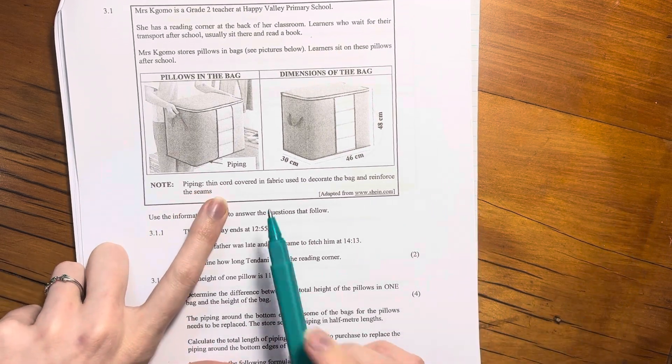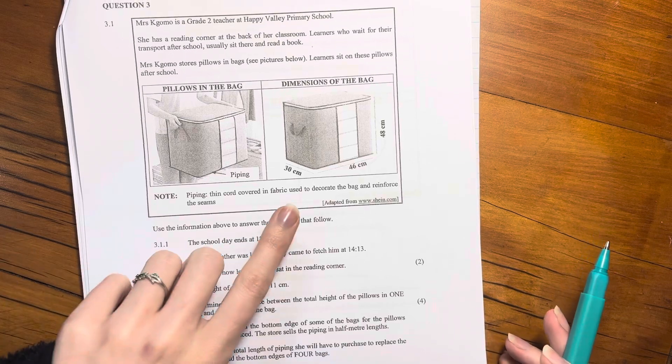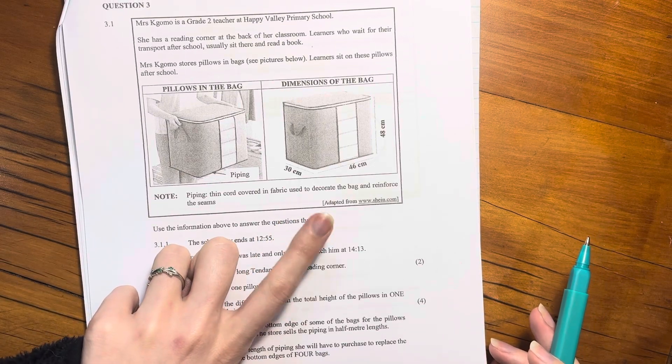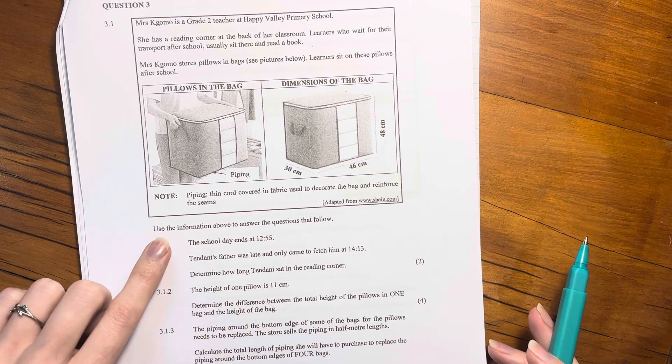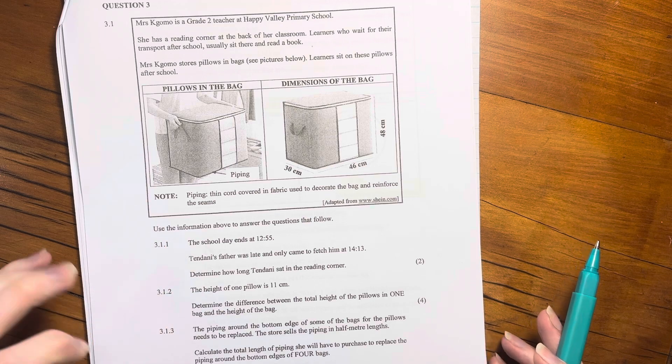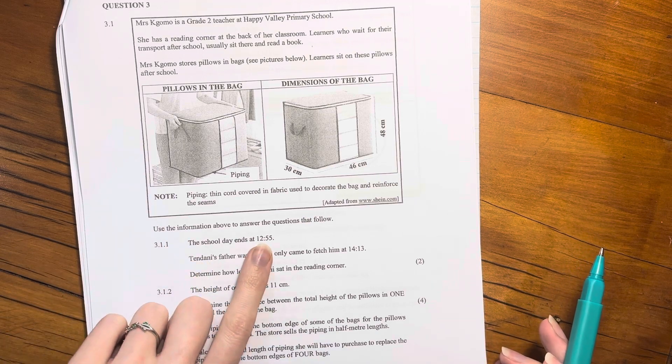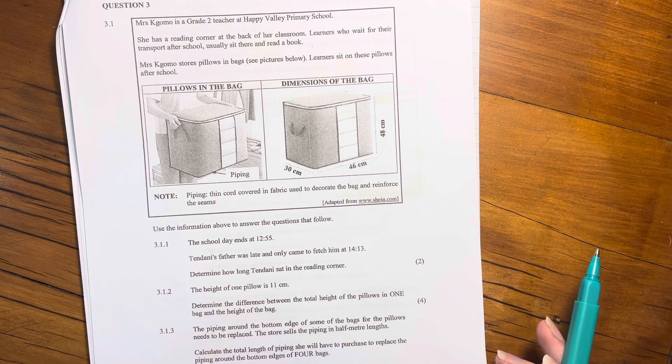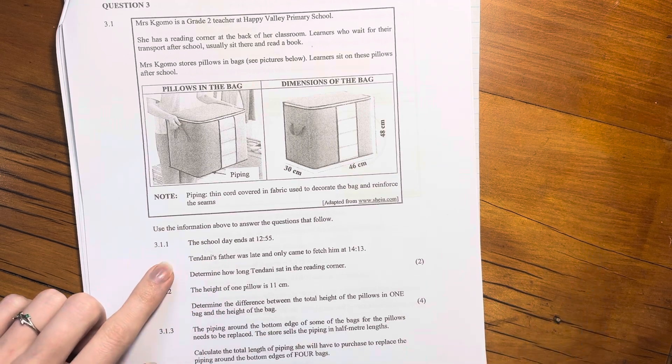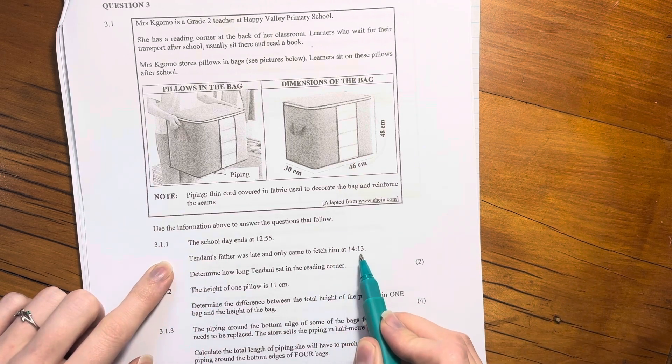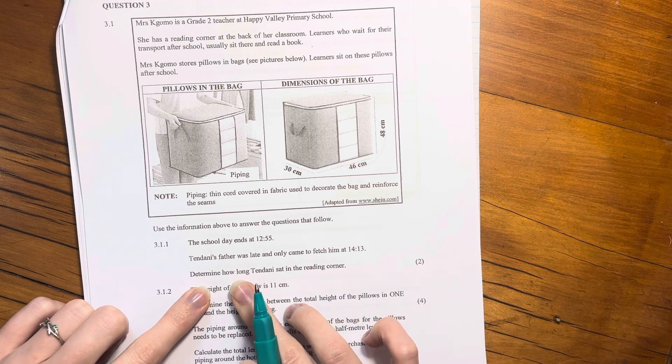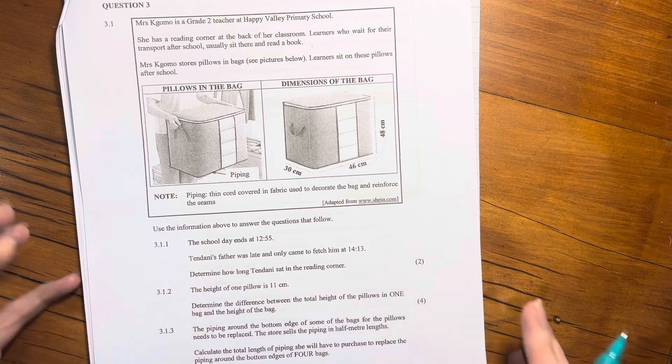Then it just tells you that the piping is a thin cord covered in fabric used to decorate the bag and reinforce the seams. Then use the information above to answer the questions that follow. So the school day ends at 12:55. Tindani's father was late and only came to fetch him at 14:13. Determine how long Tindani sat in the reading corner.